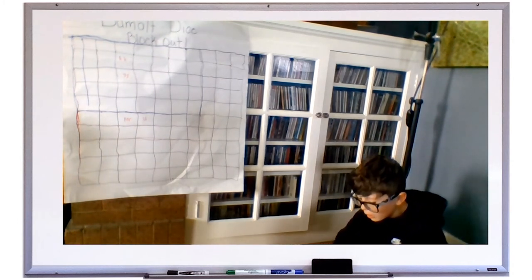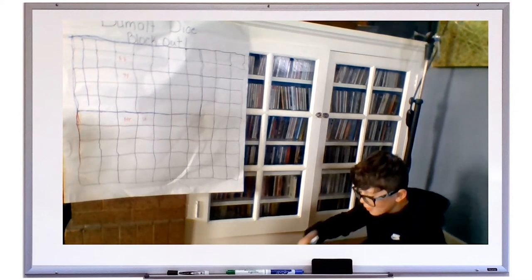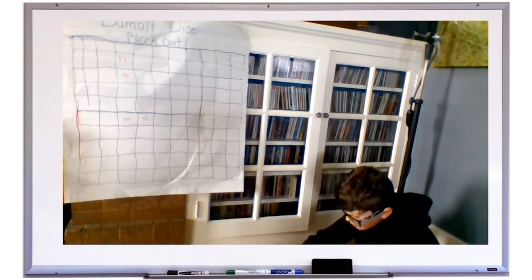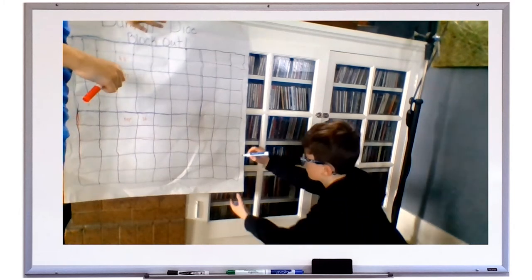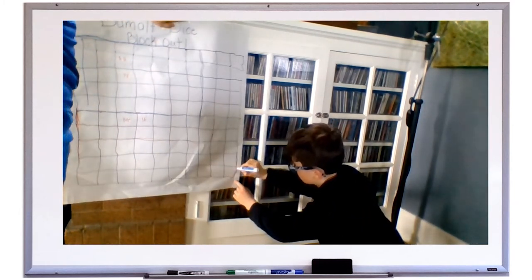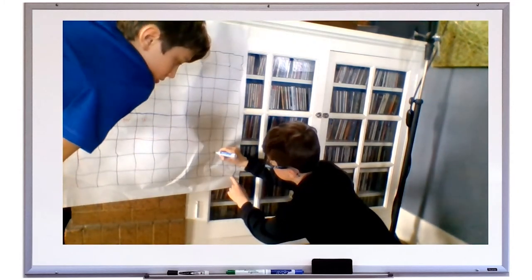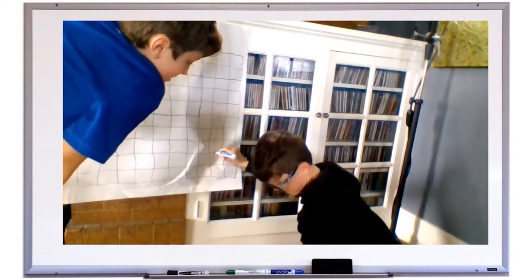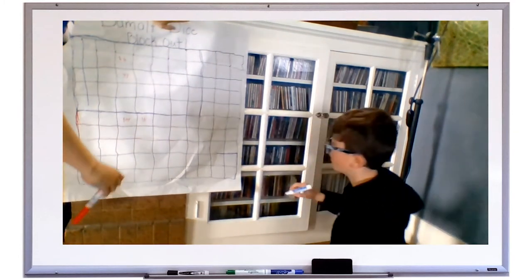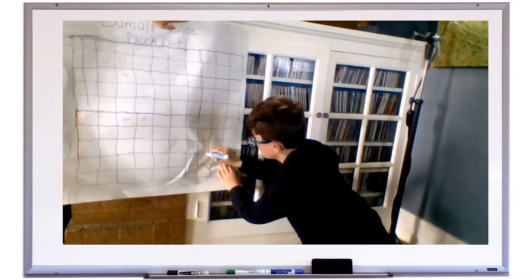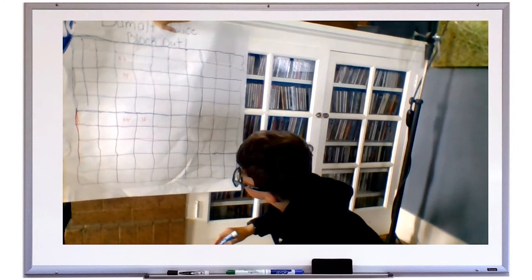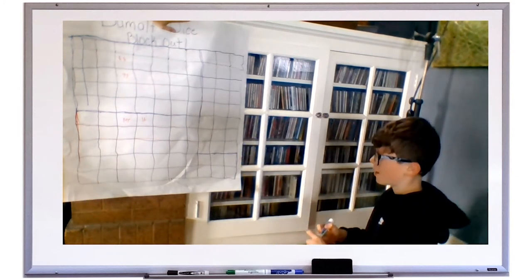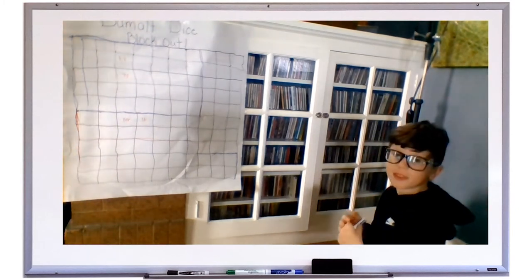Your turn. I got 4, 2, and 4. 4 plus 2 is 6 times 4 is 24. I'm wondering if you just don't have enough room on your grid. So you might have discovered you don't have enough room for that array. I think that means that I don't get any points this round, so that's his turn.